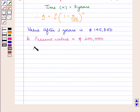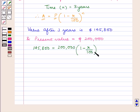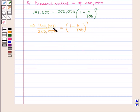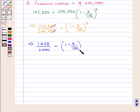So $145,800 is equal to $200,000 into 1 minus R upon 100 raised to power 3. This implies $145,800 upon $200,000 is equal to 1 minus R upon 100 raised to power 3. After cancelling the zeros, we have 1458 upon 2000 is equal to 1 minus R upon 100 raised to power 3.